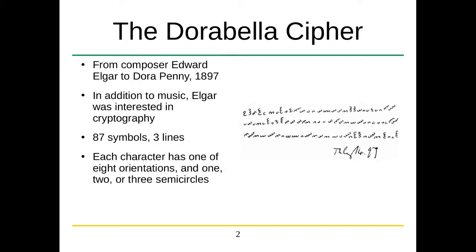The Dorabella Cipher was a cipher written on a postcard from the composer Edward Elgar to Dora Penny in 1897. Edward Elgar was interesting because he was a famous composer who composed Pomp and Circumstance, but he also had an interest in cryptography, and he composed the Enigma Variations as well, which was a cryptographic-based composition.